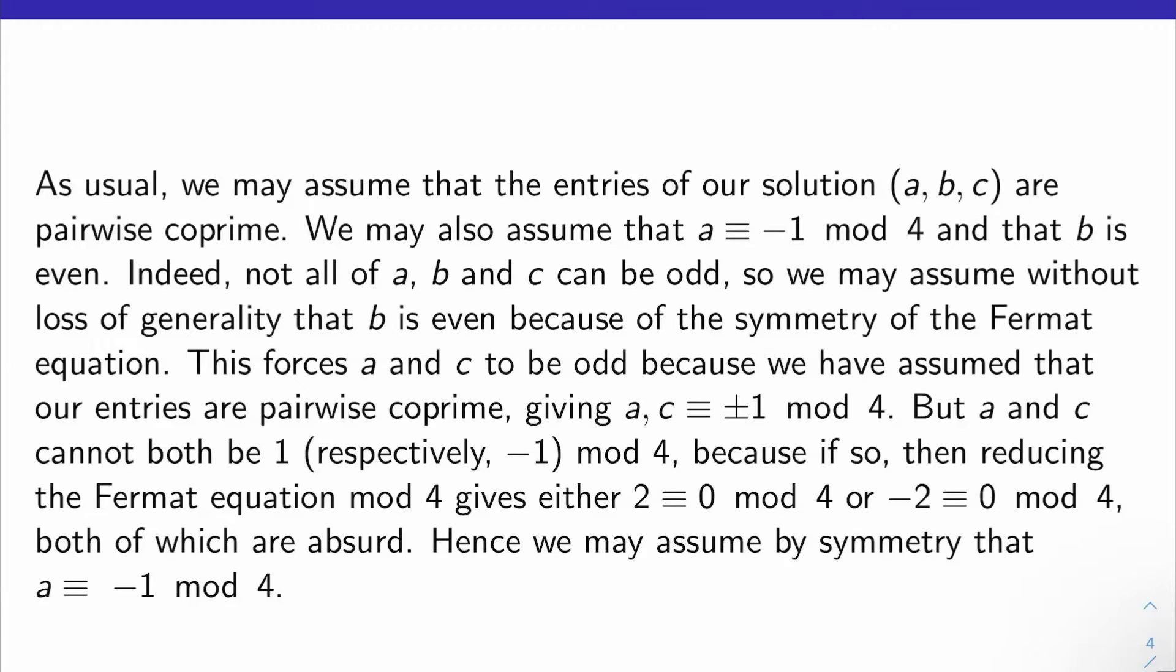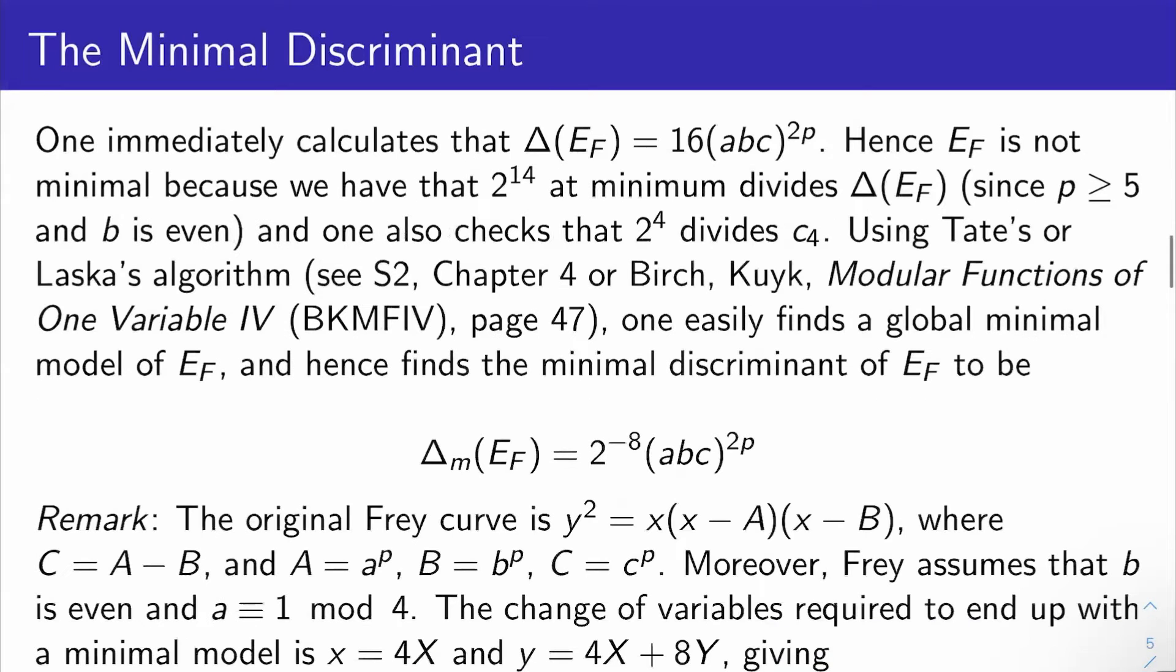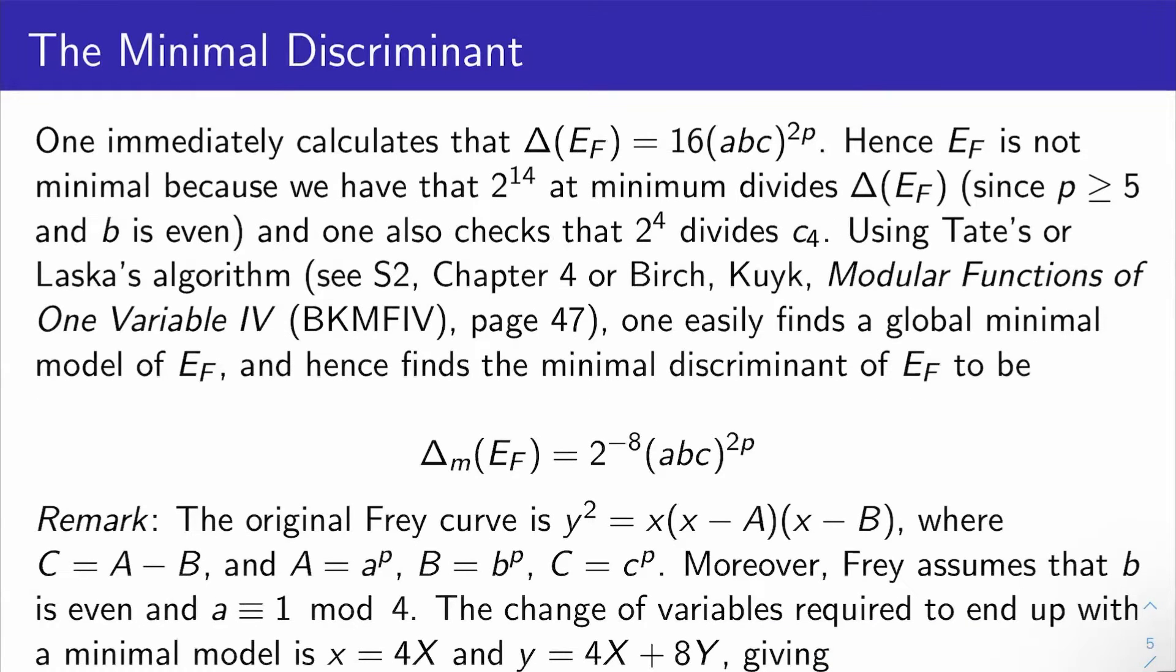Well, you take your Frey curve, you do some calculations on it. First, you compute the discriminant. You get 16(abc)^(2p). That shows you that the given model is not a global minimum model, because 2^14 certainly divides this, because you have a 2^4 here, and then you know b is even, and p is at least 5.